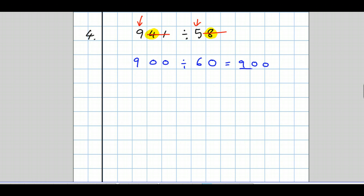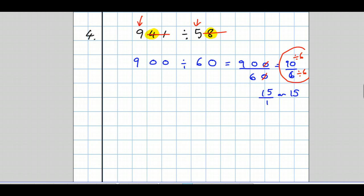So we write that as a fraction. Let's cancel a zero on the top for one on the bottom, to give us 90 over 6. What's the highest common factor of 90 and 6? 6 will go into both. If you're not sure, you might want to try doing long division: 6 into 9 goes once, remainder 3; 6 into 30 goes 5. It's sometimes quicker to get the answer that way.